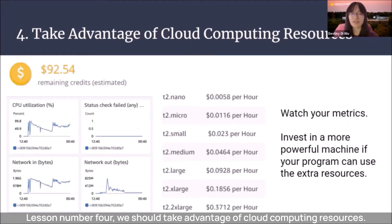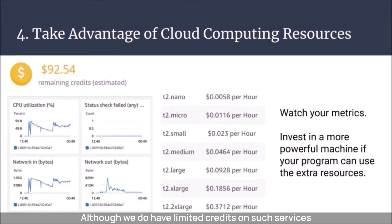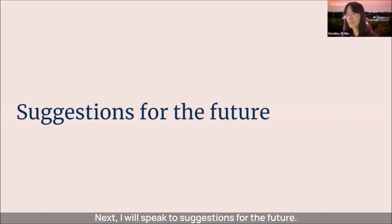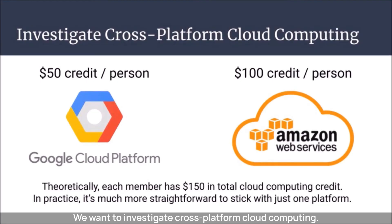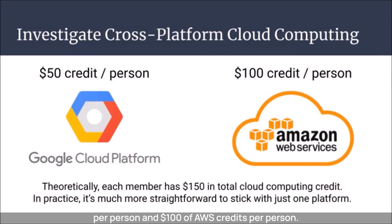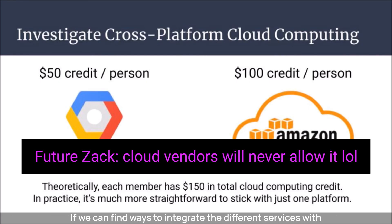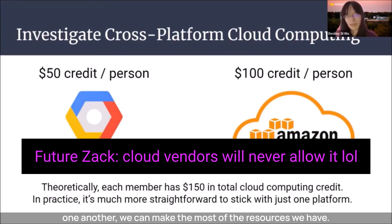Lesson four: take advantage of cloud computing resources. Although we have limited credits on services such as AWS and Google Cloud, these are ours to use. If we watch our metrics and notice a program is capable of using extra resources for higher throughput, then investing in a more powerful machine is generally worth it. We have been allocated $50 of Google Cloud credit per person and $100 of AWS credits per person — theoretically $150 per person in total — but in practice it's much more straightforward to stick with just one platform. If we can find ways to integrate different services with one another, we can make the most of the resources we have.